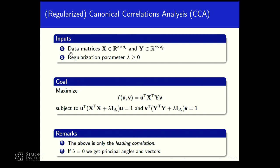CCA is a linear algebra problem with a statistical motivation. You have two random variables and want to find how to rotate them so that the correlation is maximized. You put your data in two data matrices X and Y, with N observations, X having D_X features and Y having D_Y features, and you select a regularization parameter lambda (which can be zero). You want to find vectors that are linear combinations of the features such that the correlation between the two random variables is maximized.